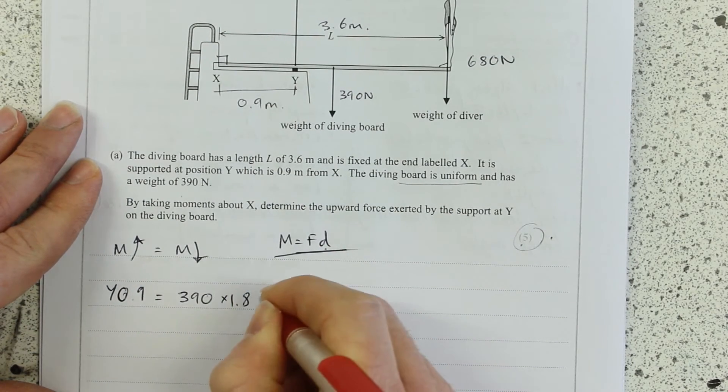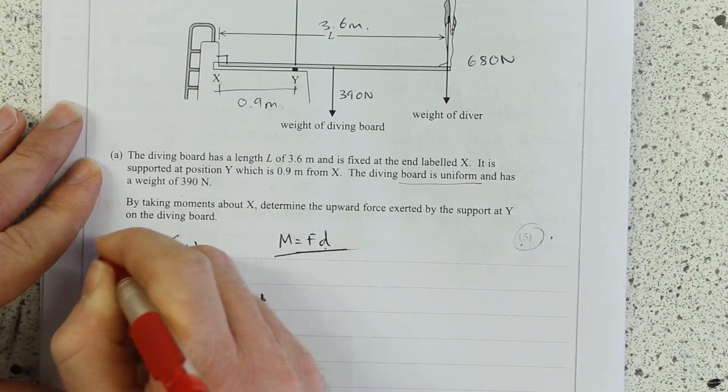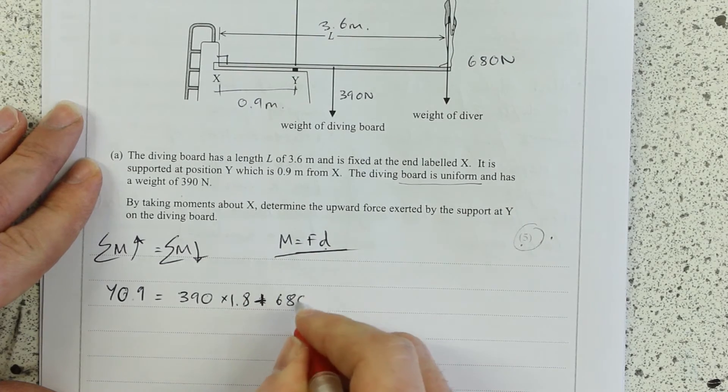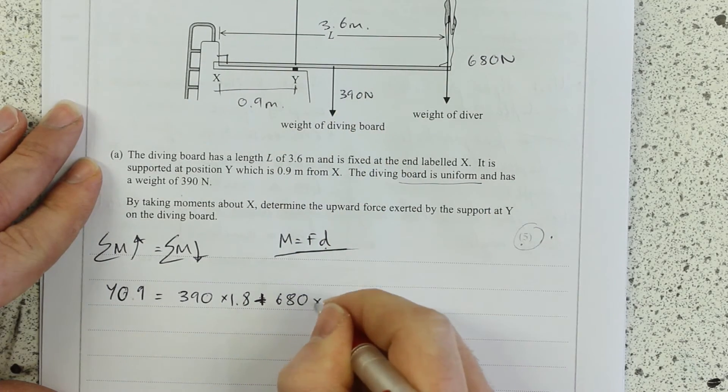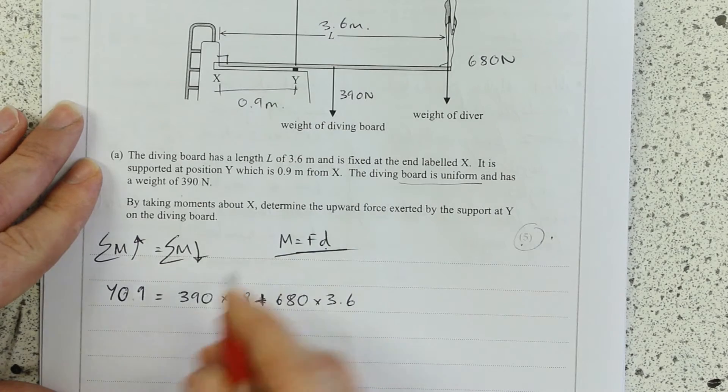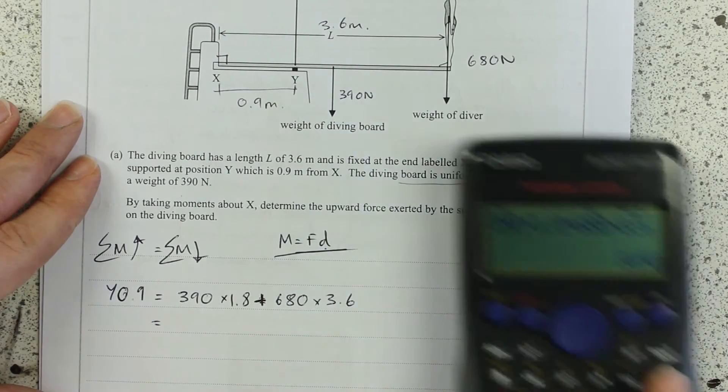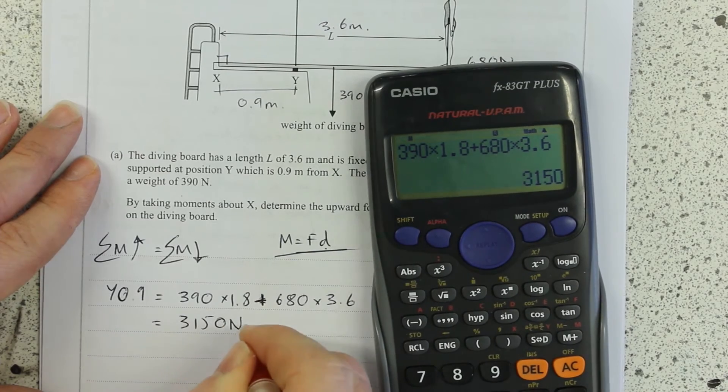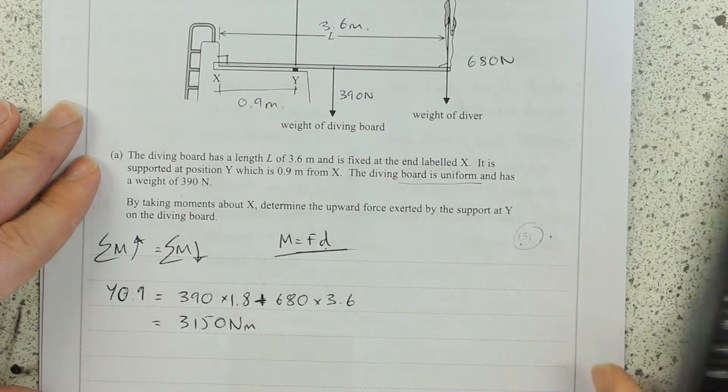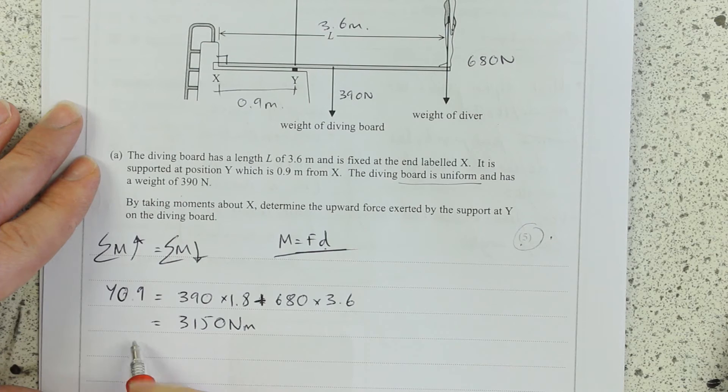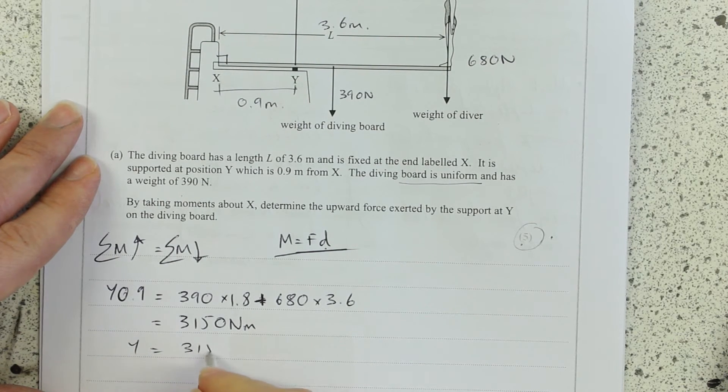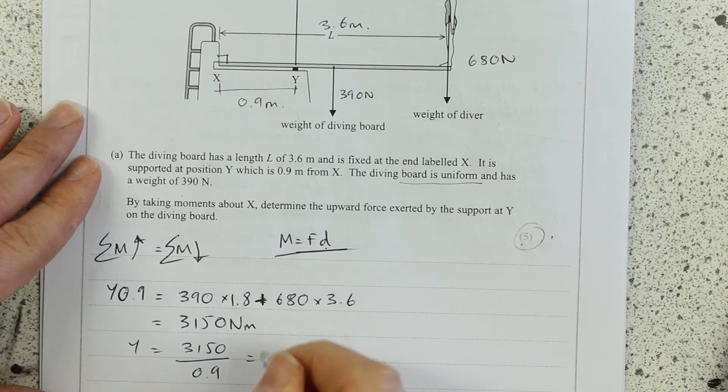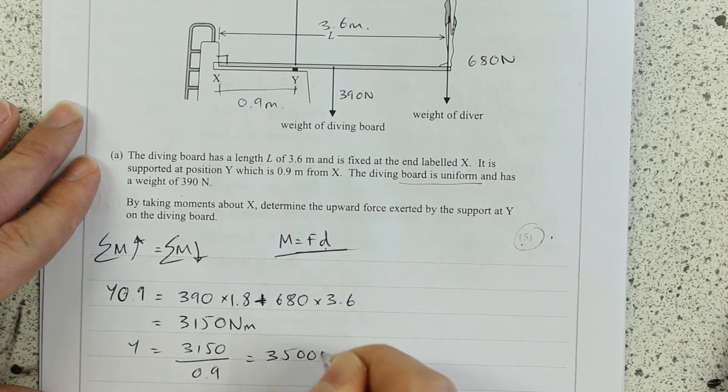Oh sorry, plus, because this should be the sum of 680 times by 3.6. Add all those up, 3,150 newton meters, which is the unit of moment or torque. And then y is going to be that over 0.9, just rearrange, which is 3,500 newtons.